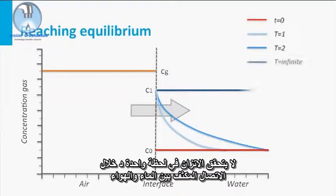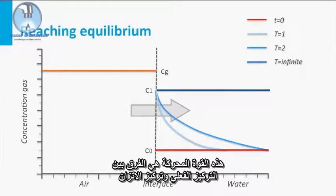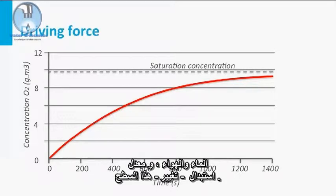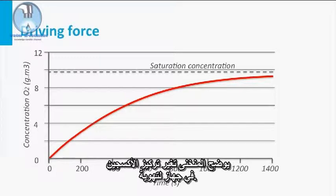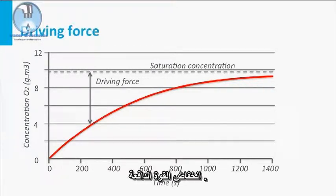Equilibrium is not achieved at once during intensive contact between water and air. Rather, the gas exchange takes place at a rate that is linear to the driving force. This driving force is the difference between the actual concentration and the equilibrium concentration. The gas transfer coefficient depends on the magnitude of the contact surface area between water and air, and the rate at which this surface is replaced. The figure shows the profile for the oxygen concentration in an aeration device. Initially, the concentration increases rapidly, but this increase is slowed down due to the reduced driving force.